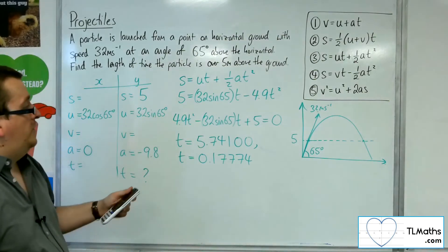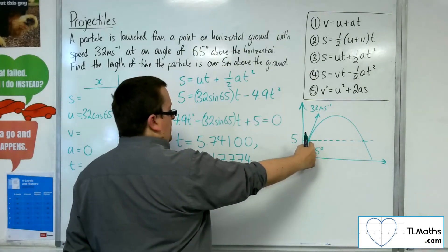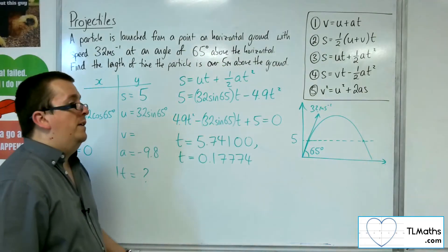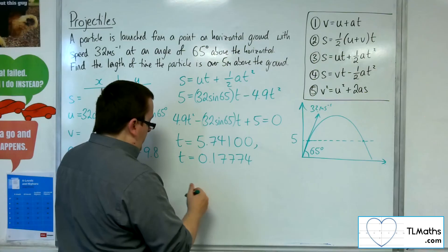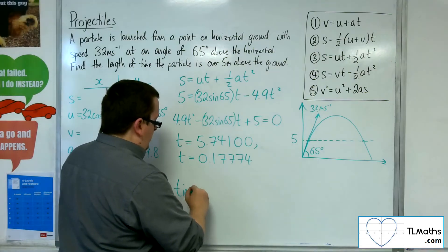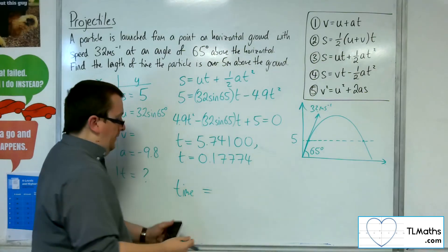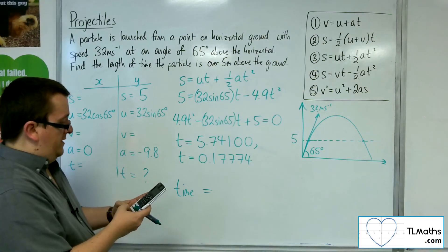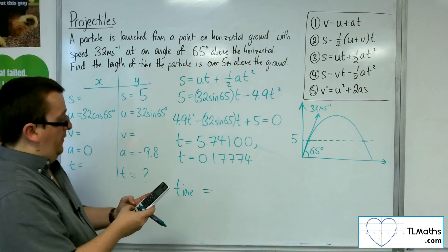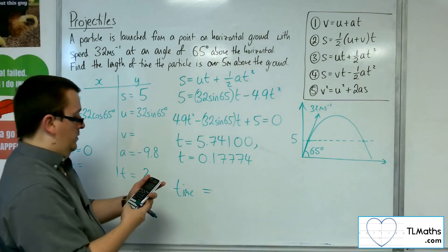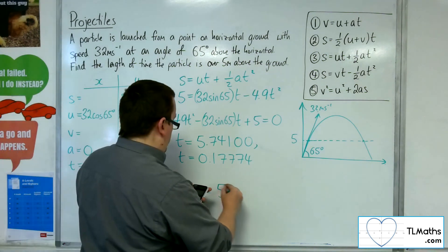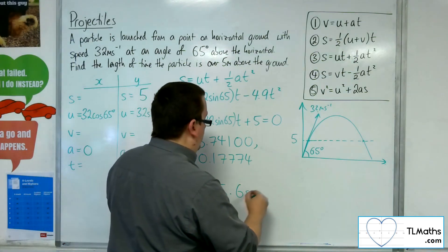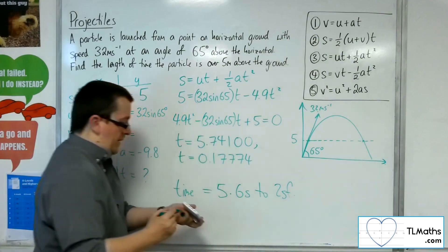So these are the two times: at time 0.17774 and time 5.74100. The amount of time that the particle is over 5 metres is the difference between those two: 5.74100 minus 0.17774, which gives 5.56326, so 5.6 seconds to 2 significant figures.